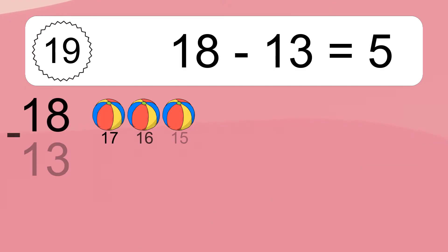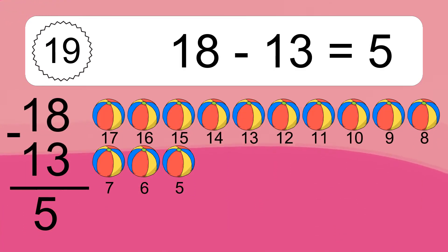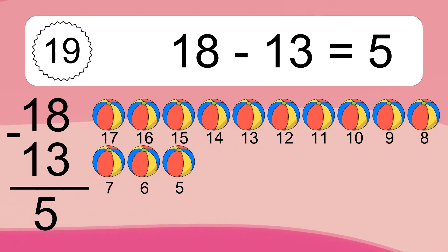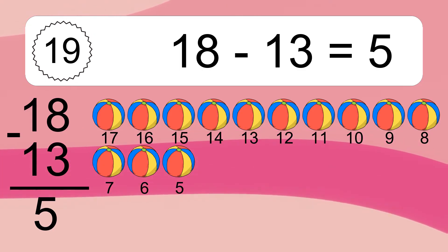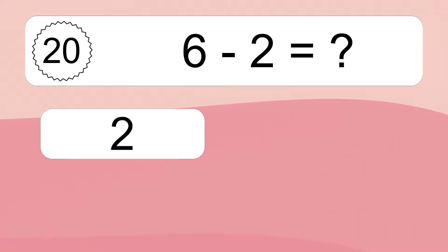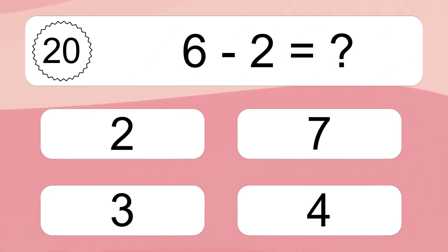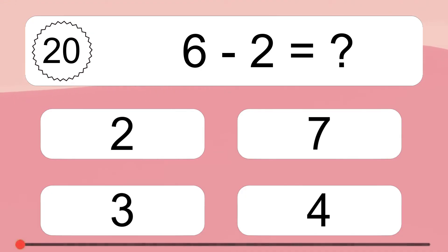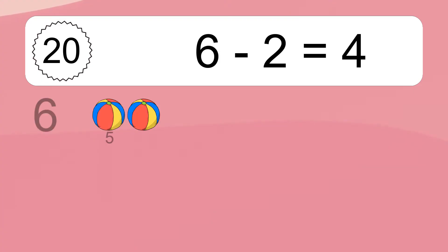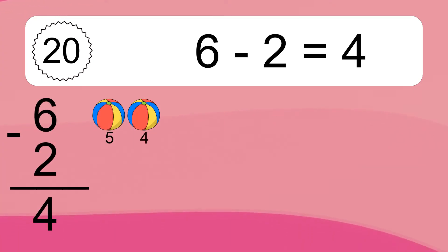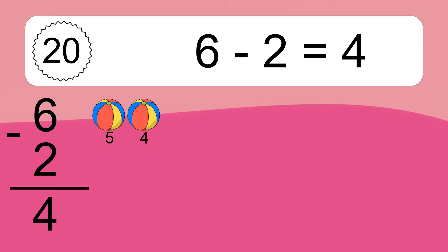18 minus 13 equals 5. Let's count it: 17, 16, 15, 14, 13, 12, 11, 10, 9, 8, 7, 6, 5. 6 minus 2 equals what? 6 minus 2 equals 4. Let's count it: 5, 4.